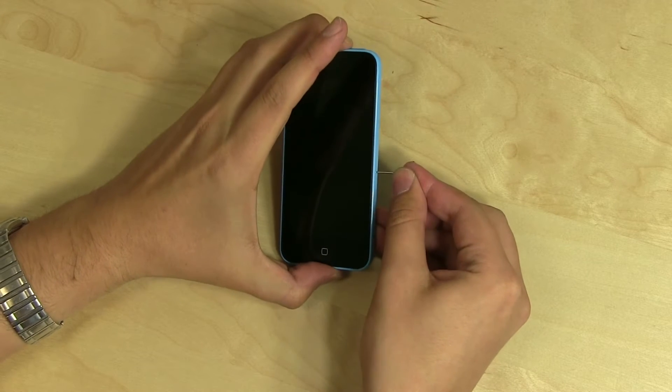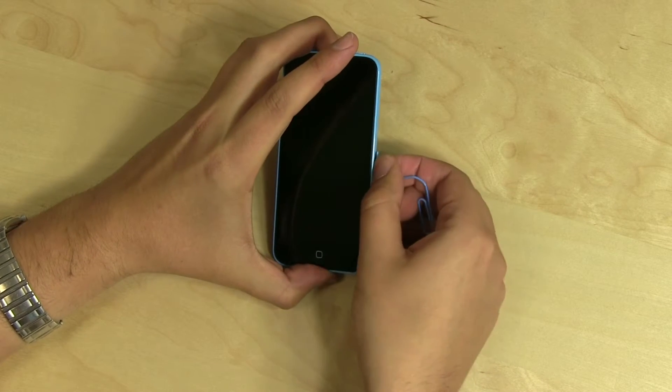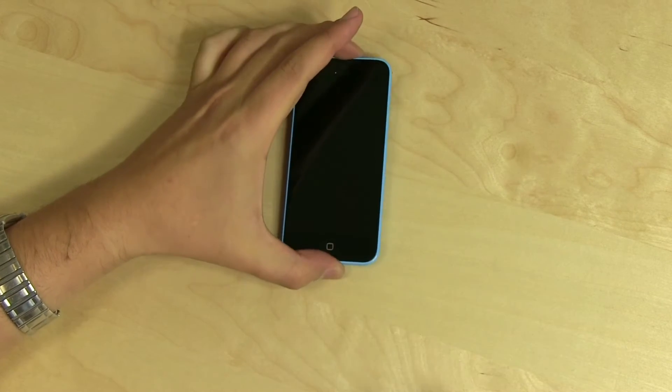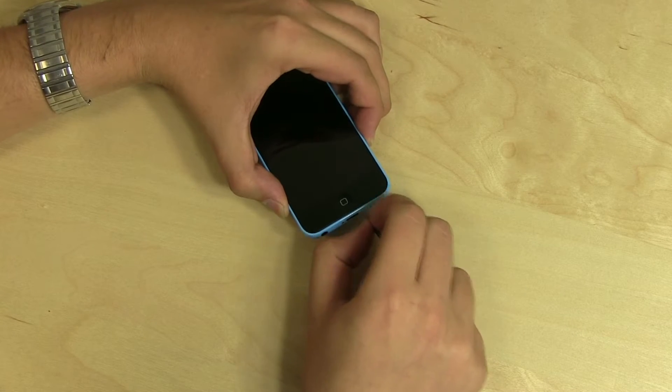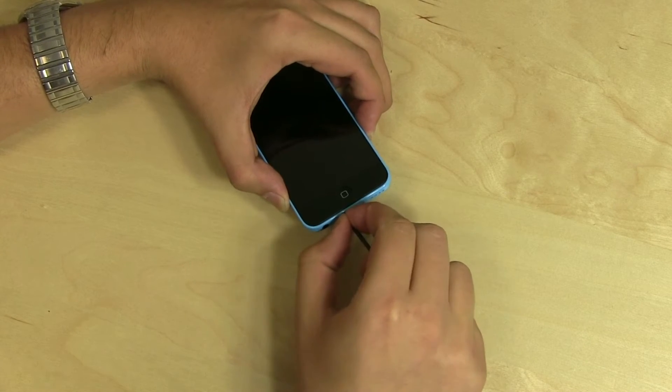Using an Apple-approved SIM removal tool, pop open the SIM tray and set it aside. Remove two pentalobe screws near the lightning port.